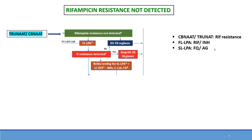In case we get rifampicin resistance not detected — which means it is sensitive — we still send another sample to the culture DST lab for first-line LPA. Based on first-line LPA, we know about isoniazid resistance also. If isoniazid resistance is detected, a different regimen is given; if not detected, a different regimen is given. First-line LPA tells you about rifampicin and isoniazid; second-line LPA tells you about fluoroquinolones and aminoglycosides. If isoniazid resistance is detected, reflex testing is done for second-line LPA and also liquid culture and DST.